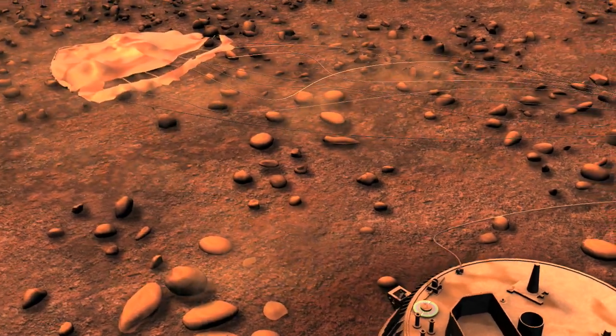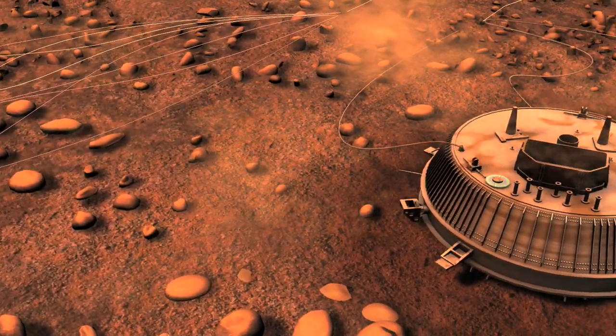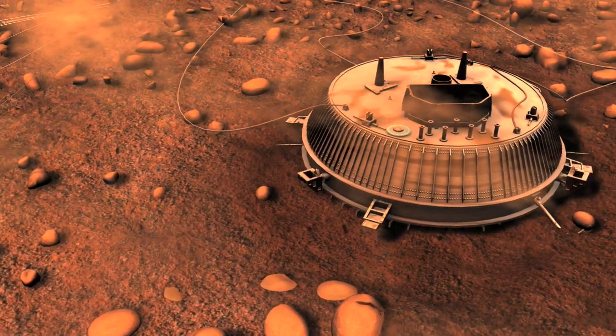A spacecraft that can land on the surface of a Solar System body provides an even closer view and can study detail that is so small it cannot be viewed by an orbiter, let alone from Earth.